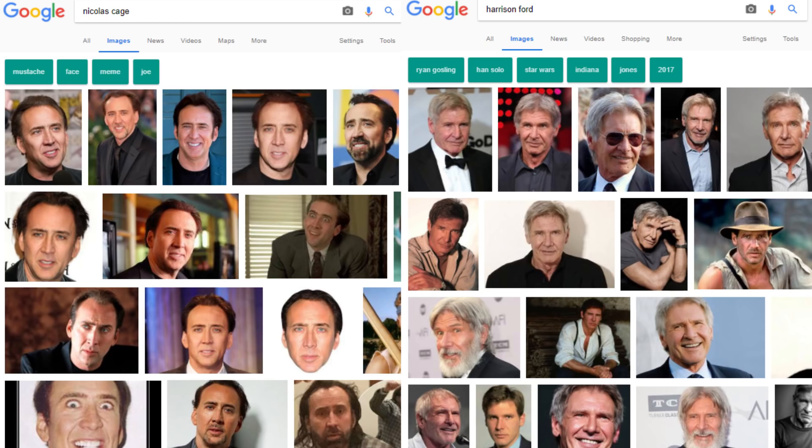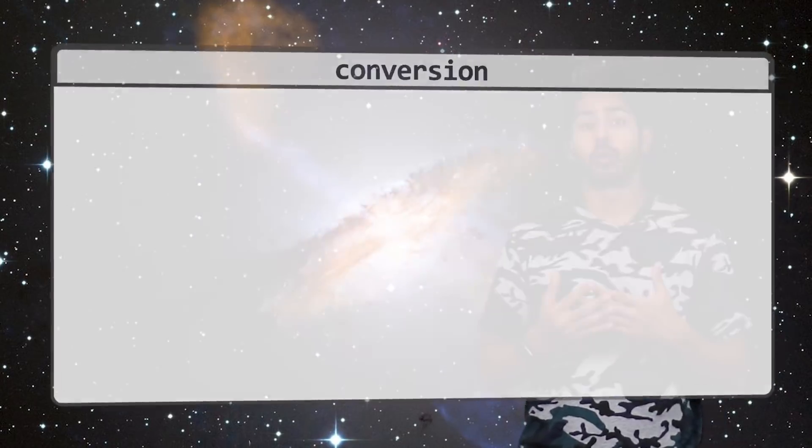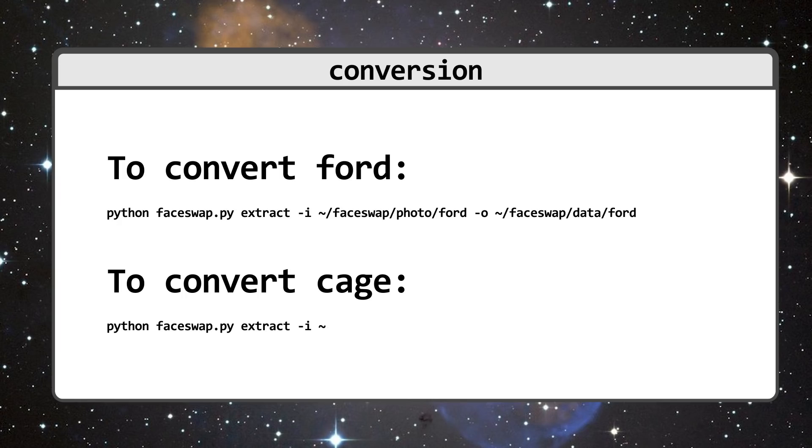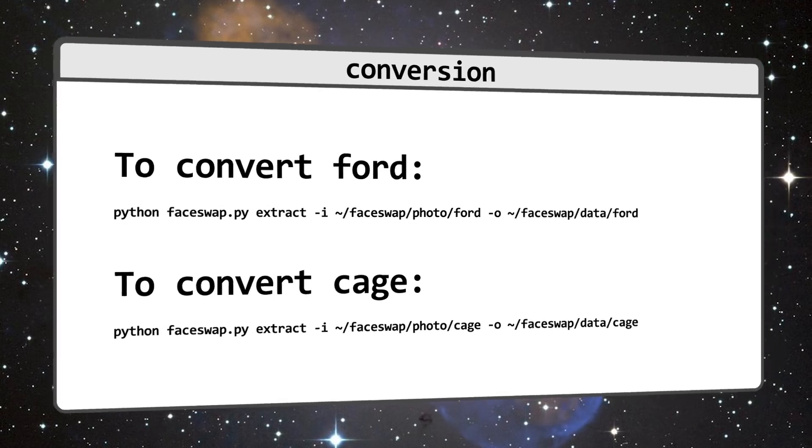Possible sources of these images could include Google, DuckDuckGo or Bing image search. Luckily the face swap repository has scripts to automatically download large amounts of images from one of these sources to our home directory. Once we've got a couple hundred images we can place them each in their respective folder.